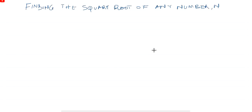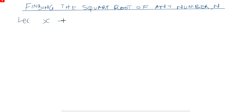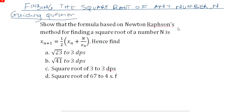Finding the square root of any number N. So let us say, let x be equal to the square root of that number capital N. Let us have a guiding equation. We have to base on this to answer some questions. They are saying: show that the formula based on Newton-Raphson's method for finding the square root of a number capital N is this.